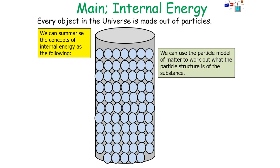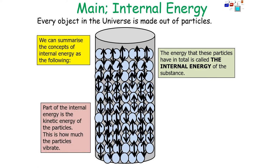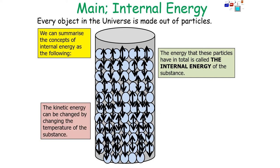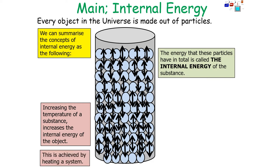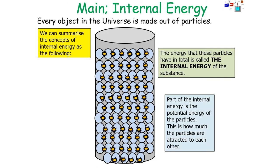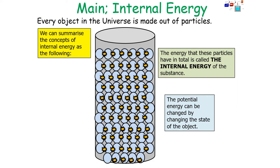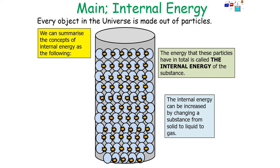Using the particle model, the energy these particles have in total is the internal energy of the substance. Part of this is the kinetic energy of the particles — how much they vibrate — which we can observe as the temperature of the substance. Increasing the temperature increases the internal energy of the system because the kinetic energy store has increased, achieved by heating a system or doing work. The other part is the potential energy of the particles, related to how much they attract each other, and this can be changed by changing the state of the object.